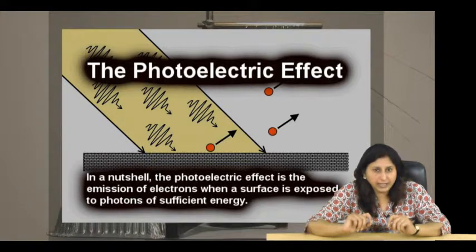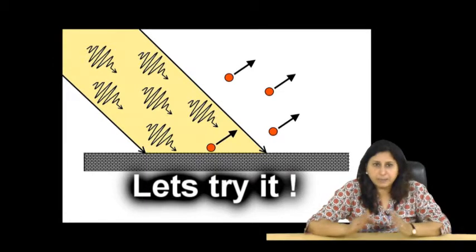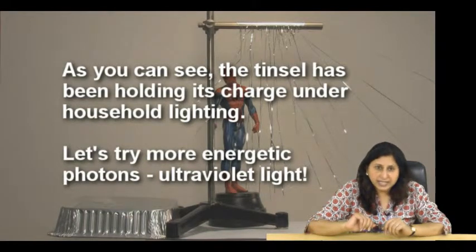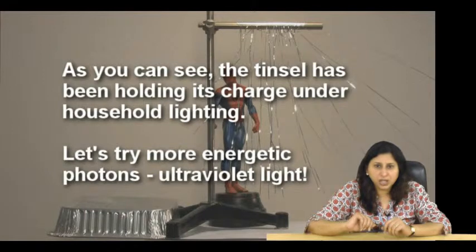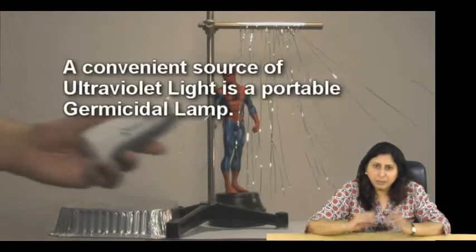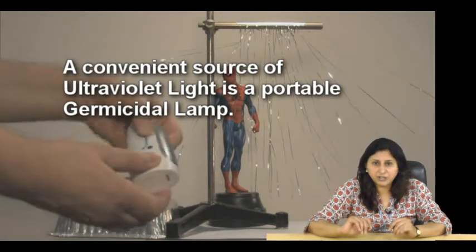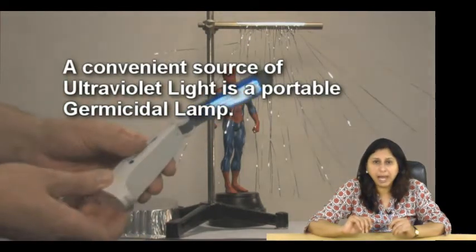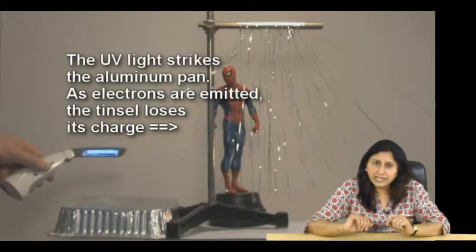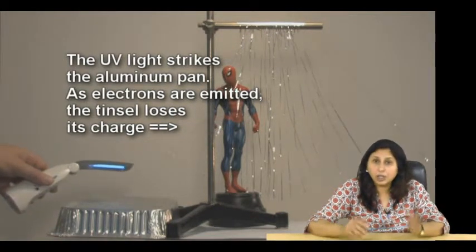In a nutshell, the photoelectric effect is the emission of electrons when a surface is exposed to photons of sufficient energy. Let us try it. You can see that the tinsel has been holding its charge under household lighting. Why don't we try some more energetic photons? The ultraviolet light. Now, a convenient source of ultraviolet light is a portable germicidal lamp. Carefully focus the UV ray at the aluminium pan. As the electrons are emitted from the light, you can see that the tinsel loses its charge.